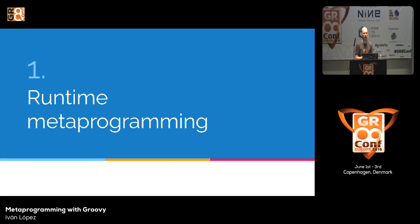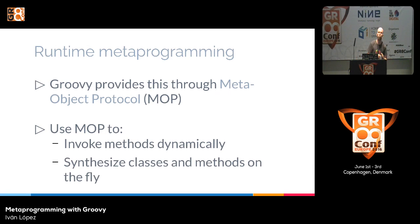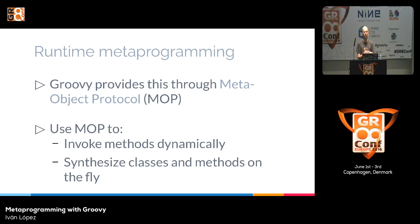Now I'm going to talk about runtime metaprogramming. With these techniques, we can postpone some decisions to runtime, intercept execution, inject new methods and new behavior, or even synthesize new methods on the fly during runtime. Groovy provides this meta-object protocol layer — the MOP. Dynamic Groovy uses this MOP layer to invoke methods dynamically, and we can hook into this layer to do all these things.